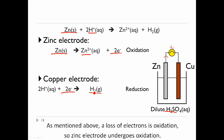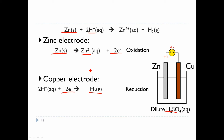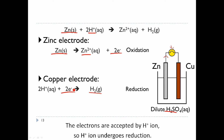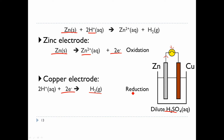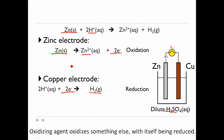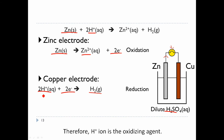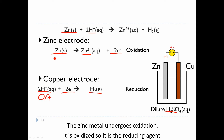A loss of electrons is oxidation, so the zinc electrode undergoes oxidation. The electrons are accepted by H+ ions, so H+ ion undergoes reduction. An oxidizing agent oxidizes something else with itself being reduced — therefore, H+ ion is the oxidizing agent. The zinc metal undergoes oxidation; it is oxidized, so it is the reducing agent.